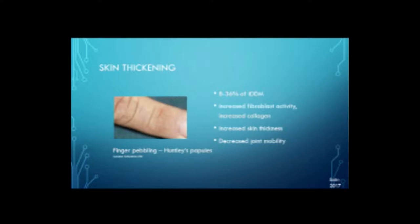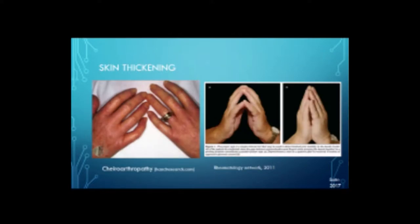Skin thickening occurs in 8% to 36% of insulin-dependent diabetics. There's increased fibroblast activity, increased collagen, increased skin thickness, and decreased joint mobility. You can see finger pebbling — these are called Huntley's papules — occurring more prominently over the knuckles. The thickening of the skin decreases movement in the joints, which we call chiroarthropathy. To test it, we use the prayer sign. A gentleman who initially was not able to approximate his hands in the prayer sign, after a few months of very good glycemic control, was able to approximate a bit better.